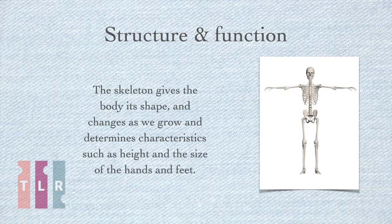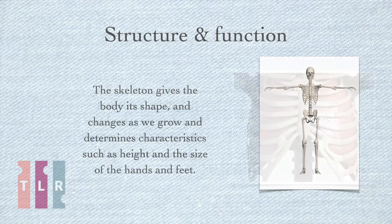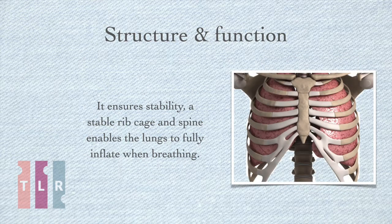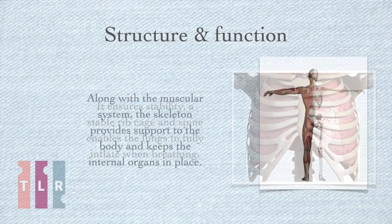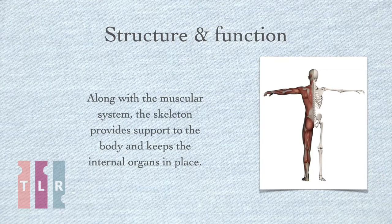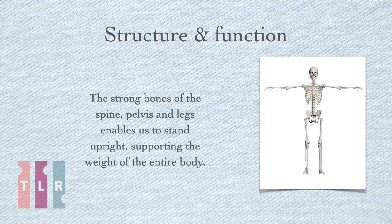The skeleton gives the body its shape as we grow and determines characteristics such as height and the size of the hands and feet. It ensures stability — a stable ribcage and spine enable the lungs to fully inflate when breathing. Along with the muscular system, the skeleton provides support to the body and keeps the internal organs in place. The strong bones of the spine, pelvis and legs enable us to stand upright, supporting the weight of the entire body.